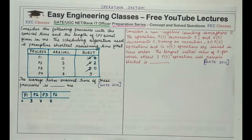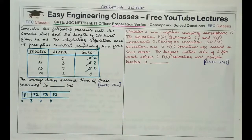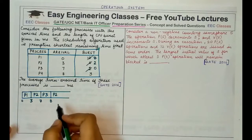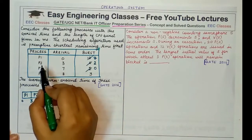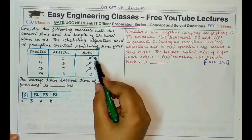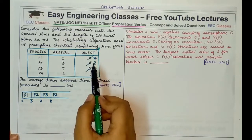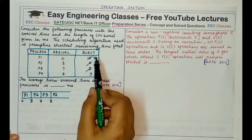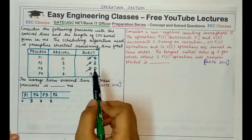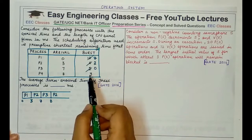From the time when all processes have arrived, shortest remaining time first effectively becomes shortest job first, because the currently executing shortest process will never be surpassed by another. So remember: once all processes have arrived, SRTF behaves like SJF. Here P2 is the shortest with two units remaining, versus seven for P1 and three for P4. After P2 finishes, we select P4 since it is shorter than P1.